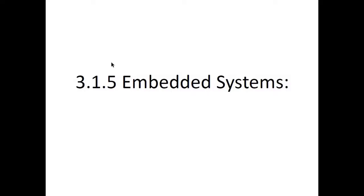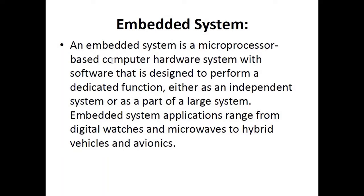Welcome to another computer science lecture. Today we would be discussing section 3.1.5, embedded systems. An embedded system is a microprocessor-based computer hardware system with software that is designed to perform a dedicated function or a specific task, either as an independent system or as part of a larger system.